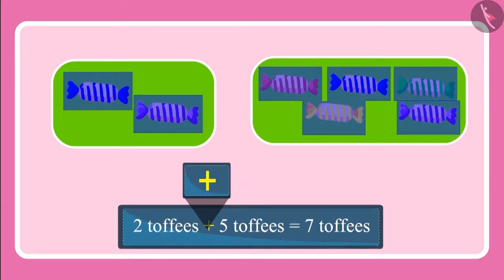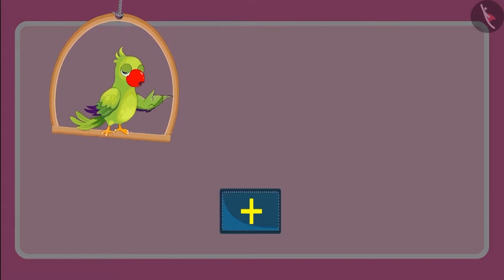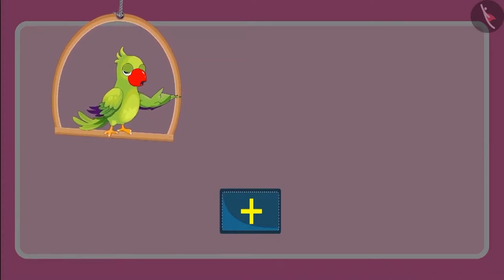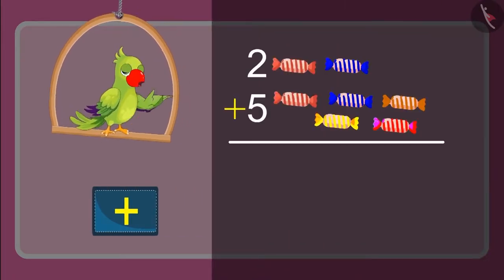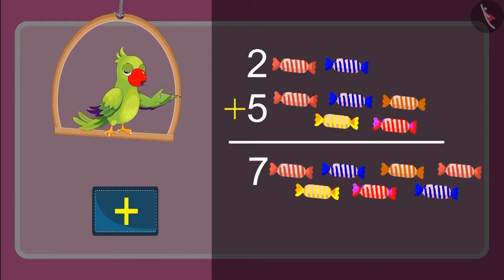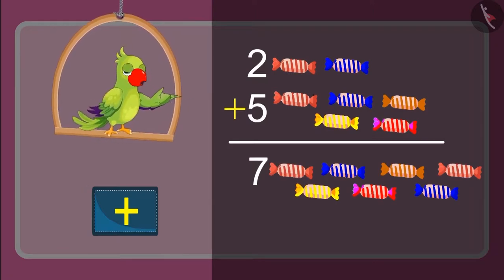Children, do you know what symbol this is? Yes, this is the symbol of addition. We can write it in one more way. This means when we added five toffees to two toffees, then we got seven toffees. You also got the same answer, right? Excellent!